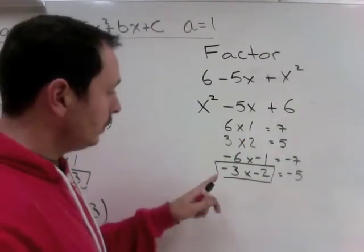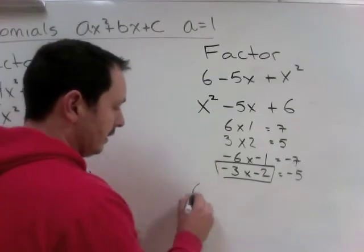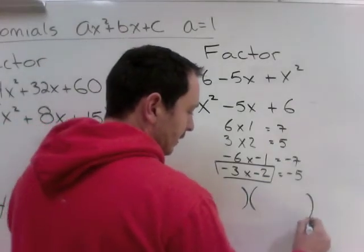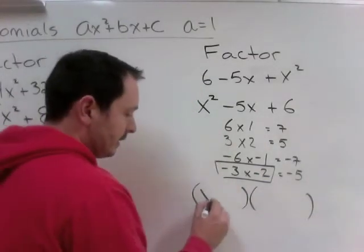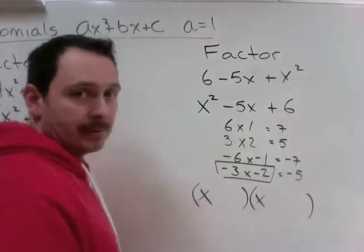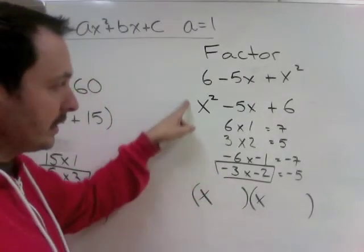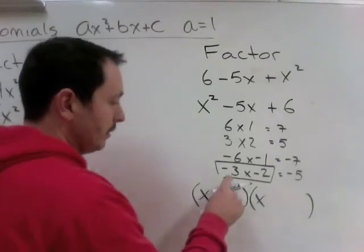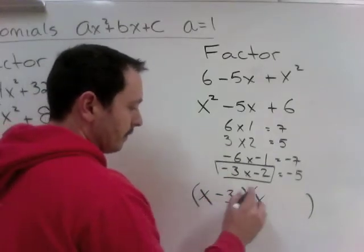So, what I'm going to do, the shortcut method, two brackets, we're using x's. Again, this method, shortcut method, only works when it's a 1x squared. Minus 3, minus 2.